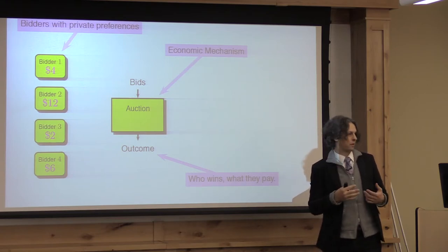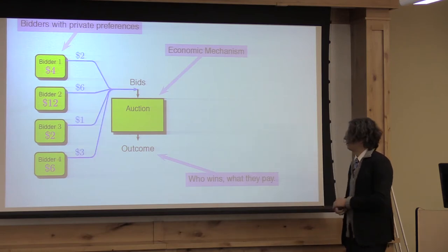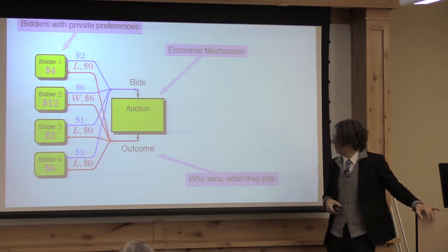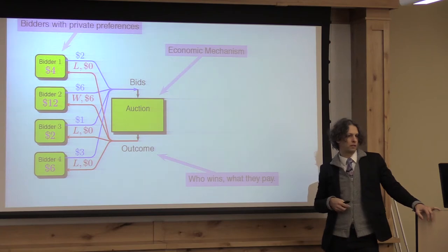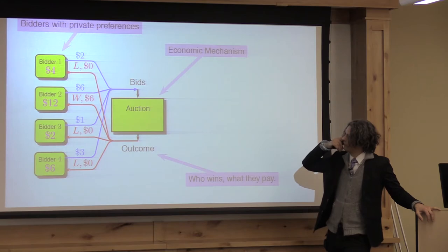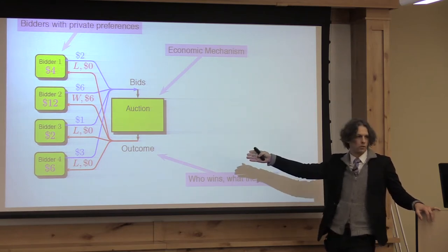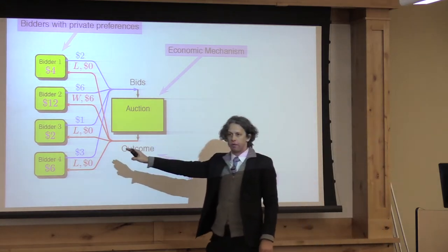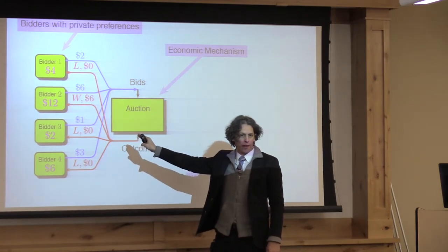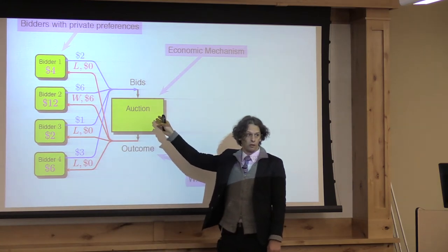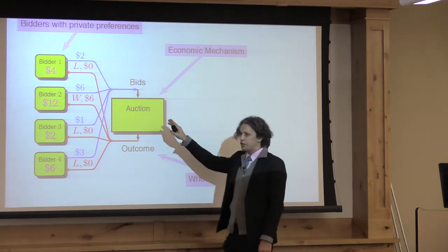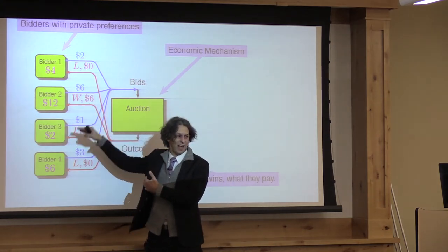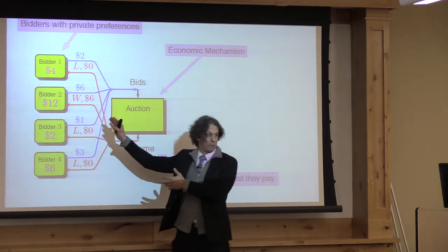If you're bidder one and the item is worth $4 to you, you think you want a good deal, so you don't bid $4 — you bid something less. Say this is a first-price auction: highest bidder wins and pays their bid. Bidder two bid $6, so they won and pay $6; everyone else loses and pays zero. The key point is that bidders think about the interplay between what others are bidding and the auction rules. If we change the auction rules, the same bidders would probably bid differently.